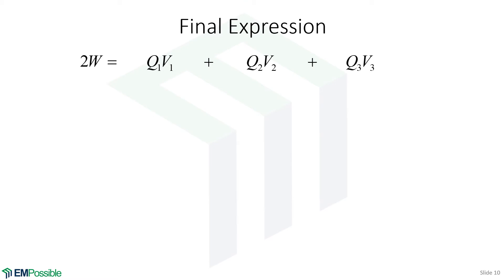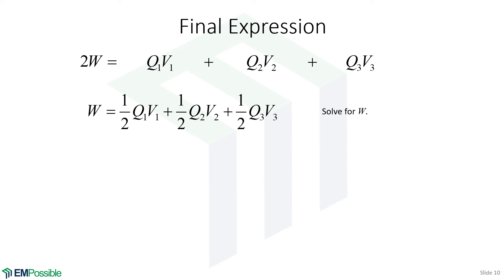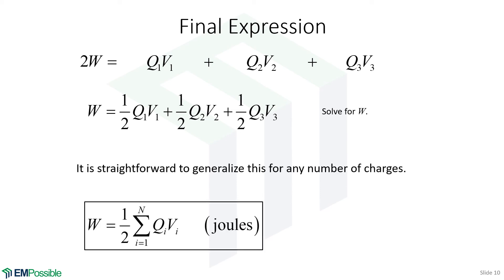Dividing both sides by two, we solve for W and end up with W = ½(Q₁V₁ + Q₂V₂ + Q₃V₃). It's straightforward to generalize this for any number of charges: the total work to assemble them is just the summation of one-half Q times V for each charge, where Q is the charge and V is the potential at that charge's location. So for any ensemble of charges, we can sum ½QV for each one to calculate the total energy stored.